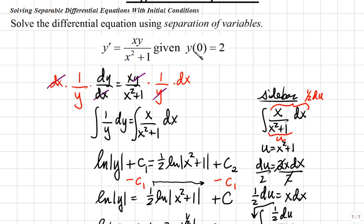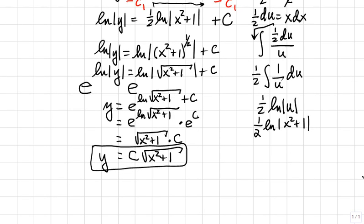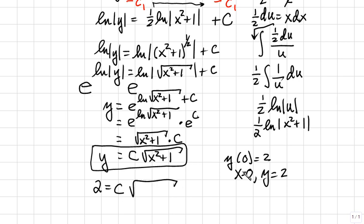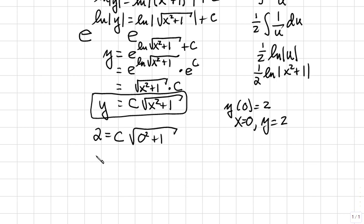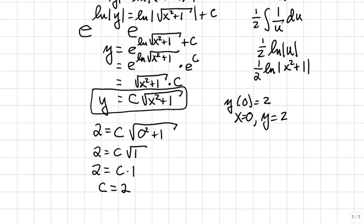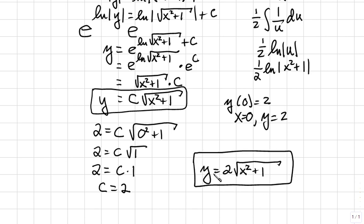We can use our initial condition y(0) equals 2 to find the constant C. When x equals 0 and y equals 2, we plug into our solution: 2 equals C times the square root of 0 squared plus 1. Simplifying, 0 squared is 0, plus 1 is 1, and the square root of 1 is 1. So 2 equals C times 1, meaning C equals 2. The specific solution to our differential equation is y equals 2 times the square root of x squared plus 1.